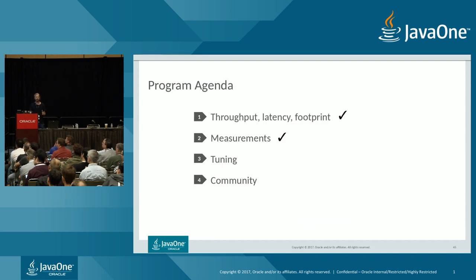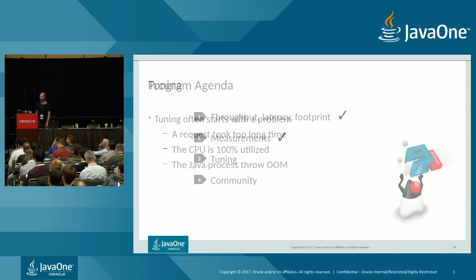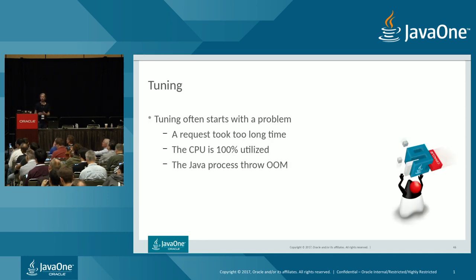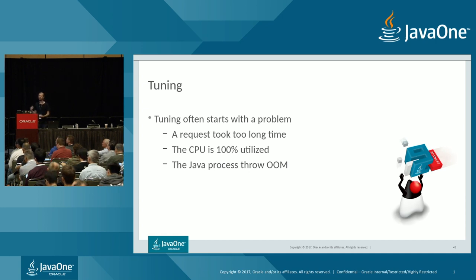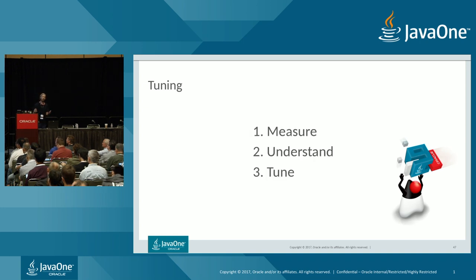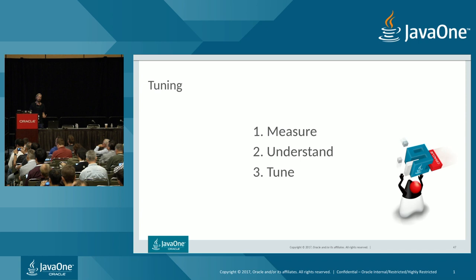Now let's get into tuning. Tuning often starts with a problem you notice — maybe a request took too long, CPU is at 100% on a server, or the Java process threw an OutOfMemoryError. You need to understand why. The method I apply is: first measure to see what happened, then understand why it happened, and when you have the data and understanding, then tune to work around and solve the issue.